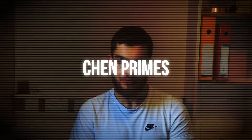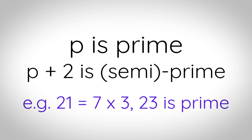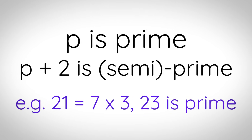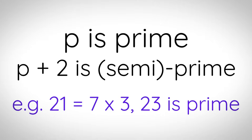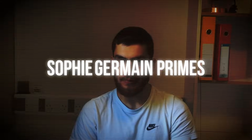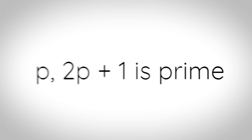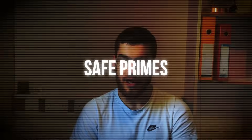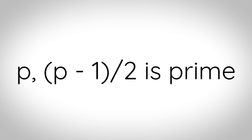Chen primes: a number p where p is prime and p plus 2 is either prime or semi-prime, meaning a product of only two prime numbers. Sophie Germain primes: a prime p where 2p plus 1 is also prime. Safe primes: a prime p where (p minus 1) over 2 is also prime.